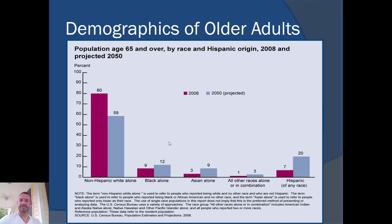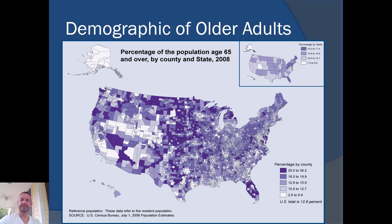The next slides cover how older adults are becoming much more diverse as a population. Without stereotyping, if I were to ask you where older adults live in the United States, you might say Florida. You can look at this map and identify where we see older adults in higher proportions, indicated by darker colors.